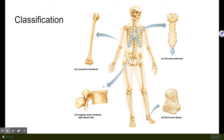Then there are irregular bones, called irregular because they have no regular shape. Looking at the vertebra, its shape is determined by its function — it is very specifically shaped. The hip bone is another example of an irregular bone. The only reason it's shaped that way is to perform its very specific function; it doesn't match anything else in the skeletal system.